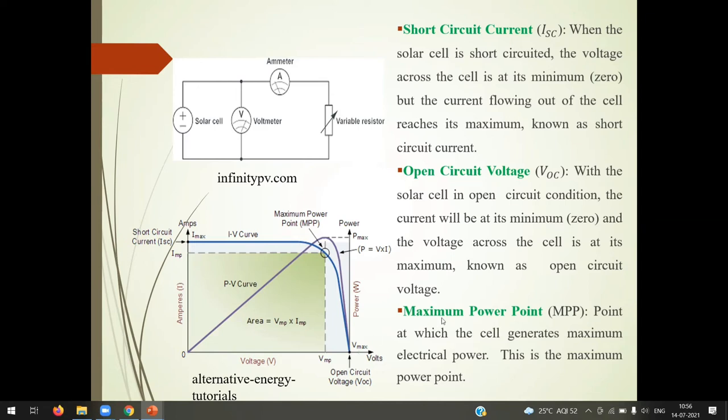Now, we will see maximum power point MPP, this point. This is the point at which the cell generates maximum electrical power. See friends, electrical power is voltage into current. It is called power. So, this is the point where we get maximum power generated by this solar cell.